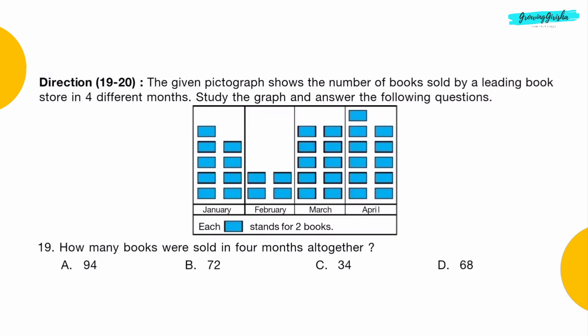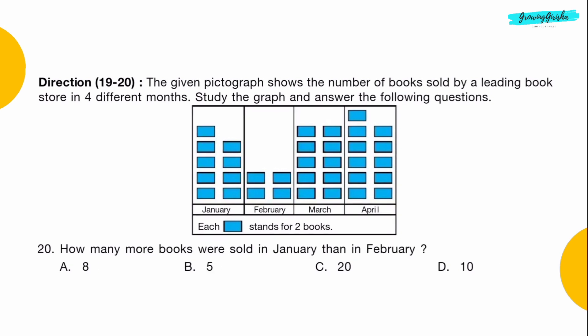Questions 19 and 20: The given pictograph shows the number of books sold by a leading bookstore in 4 different months. Study the graph and answer the following questions. Question 19: How many books were sold in 4 months altogether? Option D: 68. Question 20: How many more books were sold in January than in February? Option D: 10.